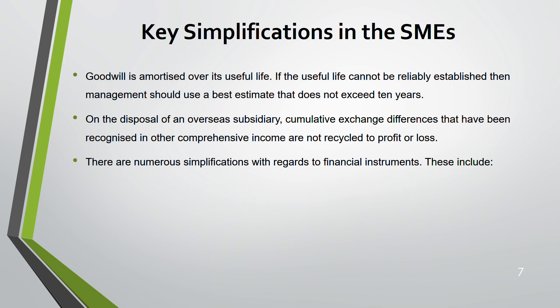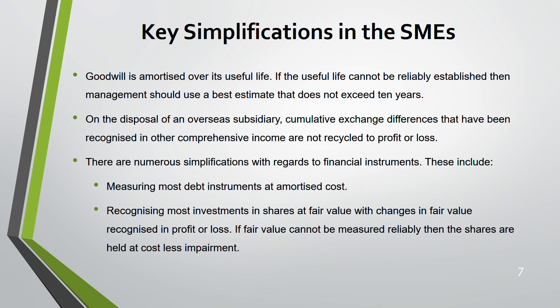Financial instruments have also been simplified. For debt instruments, whereas IFRS 9 provides options such as amortized cost or fair value through profit and loss, under SMEs most debt instruments are measured at amortized cost only. For investments in shares, gains and losses go through profit and loss — other comprehensive income options are not available. However, if fair value cannot be measured reliably, shares are held at cost less impairment.